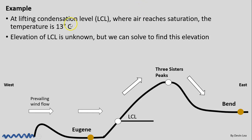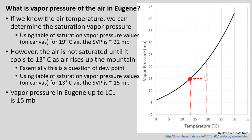We also know in this example that our lifting condensation level — the point at which, as we travel up our mountain from Eugene, our air reaches saturation — has a temperature of 13°C at that point. I've marked our lifting condensation level here. While we don't know the elevation of that location in this example, that is one of the things we can solve for, and we're going to find that elevation in the first part of our travels.